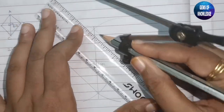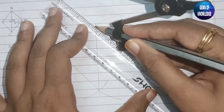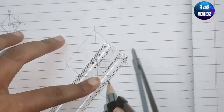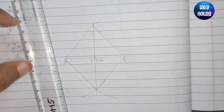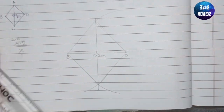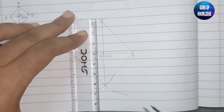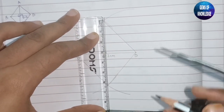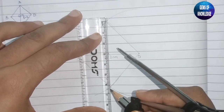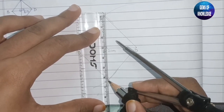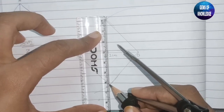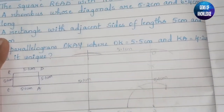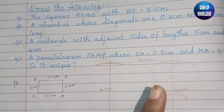Once the perpendicular bisector is drawn through the midpoint, we measure 6.4 centimeters along it — 3.2 centimeters on each side of the center. Joining all four vertices gives us the rhombus. The diagonal measurement of 6.4 centimeters is confirmed, completing the second sub-question.